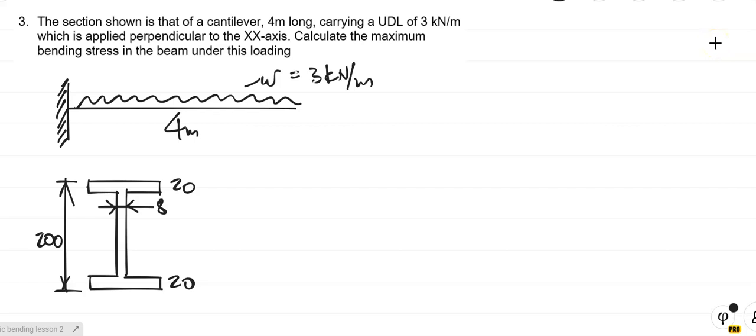Alright people, there is the third problem. As we are going, it just gets a little more complicated, but just more things to do. The section shown is that of a cantilever, it's 4 meters long, so L is equal to that.